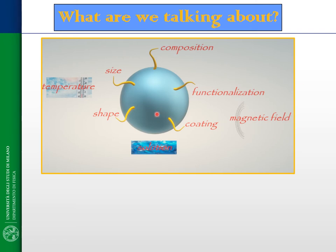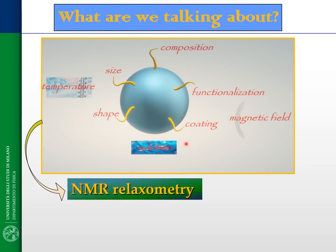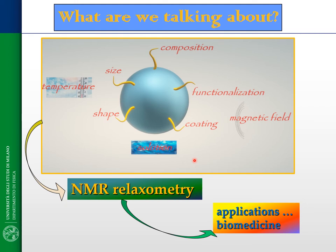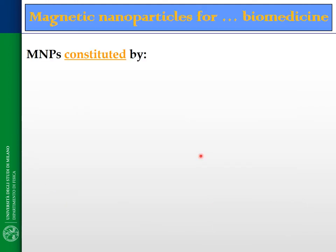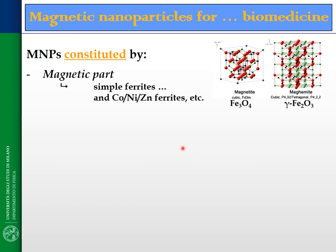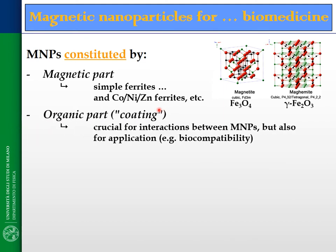Today the focus is magnetic nanoparticles and their characteristics like composition, size, shape, coating and functionalization, and also some external parameters like temperature, solution, and external applied magnetic field that can influence the NMR relaxometry of the magnetic nanoparticles, in particular in view of their application in magnetic resonance imaging. The magnetic nanoparticles are constituted by a magnetic part, normally simple ferrites or ferrites doped with different metallic ions, and an organic part that is crucial to allow the magnetic nanoparticles to become biocompatible.